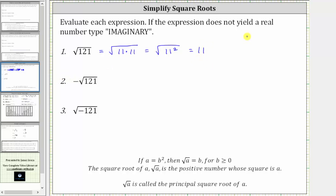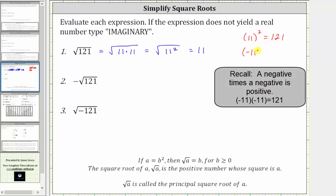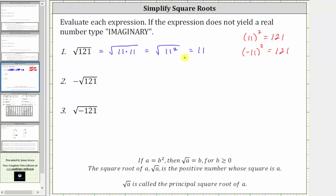So again, this simplifies to 11 because positive 11 squared equals 121, and 11 is greater than or equal to zero. Notice how it's also true that if we square negative 11, we still get positive 121. So 121 actually has two square roots, positive 11 and negative 11. But the notation used here, the principal square root, indicates we only want the positive square root.